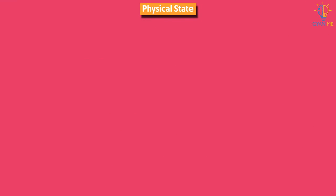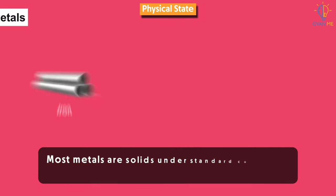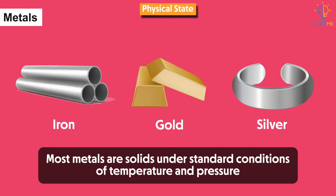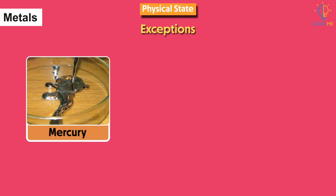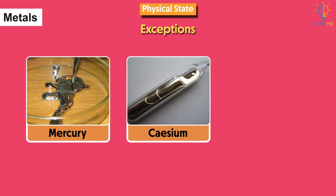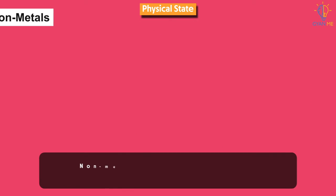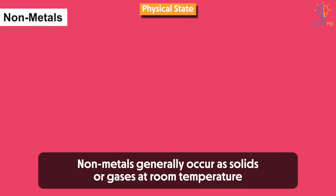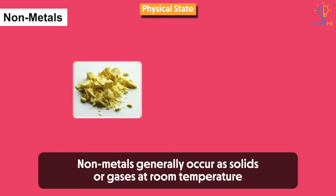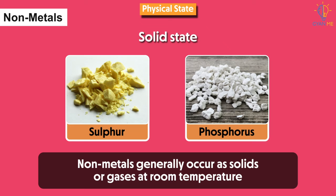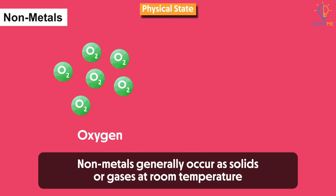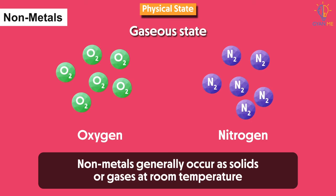First, let us see their physical state. Most of the metals are solids at standard conditions of temperature and pressure. But there are some exceptions — metals like mercury, cesium, francium, and gallium are found in the liquid state. While non-metals generally occur as solids or gases at room temperature. For example, sulfur and phosphorus occur in solid state, while elements like oxygen and nitrogen occur in gaseous state.